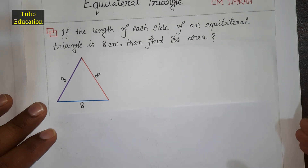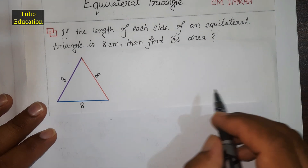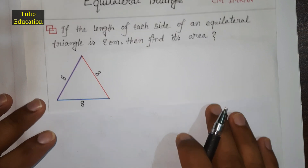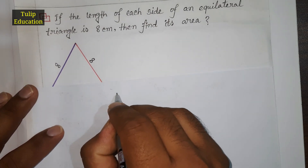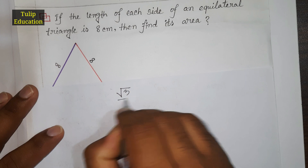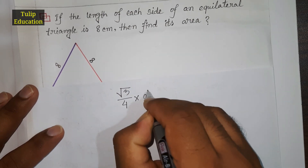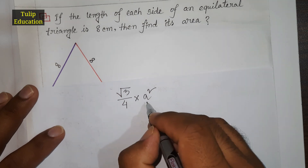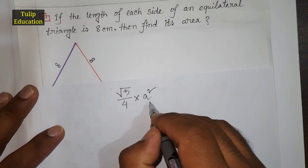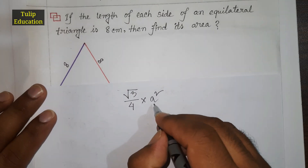In our previous tutorial we learned that the area of an equilateral triangle is root 3 divided by 4, into a squared, where a is the length of any one side.